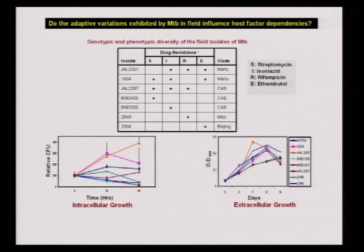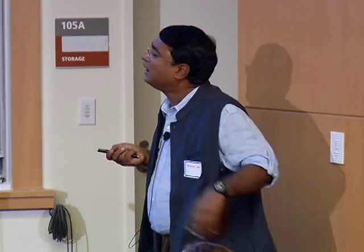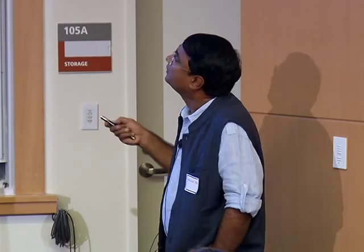If you look at the growth properties of these strains inside THP1 cells, they're quite variable. Some have suggested that growth rates within the host cell may reflect virulence properties. Nonetheless, these seven strains encapsulate the level of variation seen in the field — in terms of genotype, drug sensitivity profiles, and growth rates which may or may not relate to virulence properties.